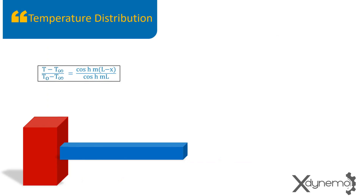The temperature distribution in a FIN is given by the formula: (T minus T_infinity) divided by (T_naught minus T_infinity) equals cosh(M × (L minus X)) divided by cosh(M × L).